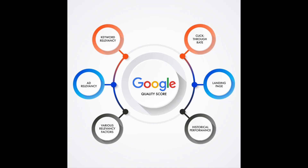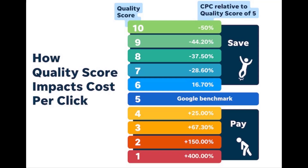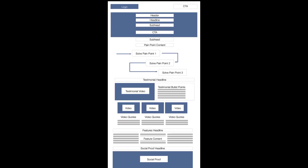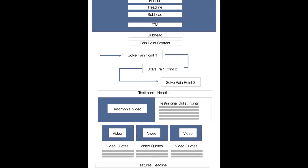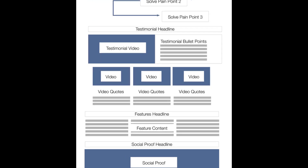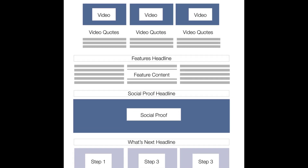Advertising platforms use a similar SEO algorithm to determine your quality score — an arbitrary score given to each page based on how it relates to the keyword. This helps platforms keep irrelevant information off certain searches, but it also allows them to artificially inflate the price of a click. The code structure for this type of page is similar to the SEO structure, with a few major differences.